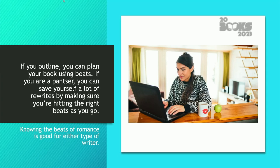If you outline, you can plan your story beats ahead of time. If you're a pantser or a discovery writer like I am, you can save yourself a lot of rewrites by making sure you're hitting those beats as you go. This is how I write my books, so knowing the beats of romance can save you a lot of headache later on, and it's good for either kind of writer.